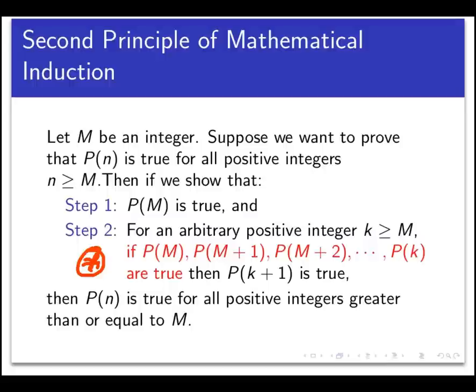So the main difference here, really the only difference between the second principle of induction and what we've learned already, is the inductive hypothesis. Here the inductive hypothesis is stronger. We're assuming the truth of the predicate not only for just a single unspecified value of the variable, but for all values of the variable up to and including that unspecified value.